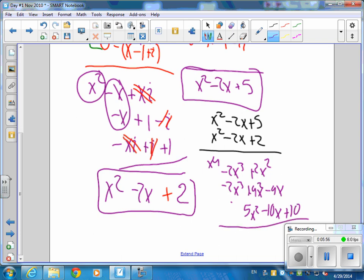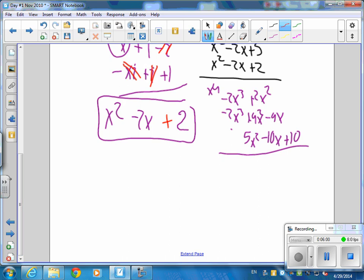5 positive 5x squared minus 10x plus 10. So then when I add all of those up, I'm going to get x to the 4th, we'll get minus 4x cubed, a bunch of x squared, 9, 10, 11 x squared.